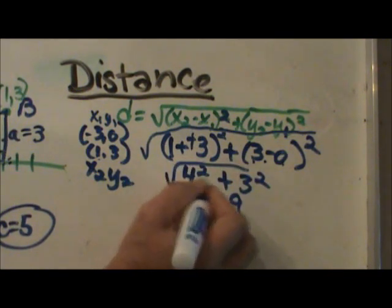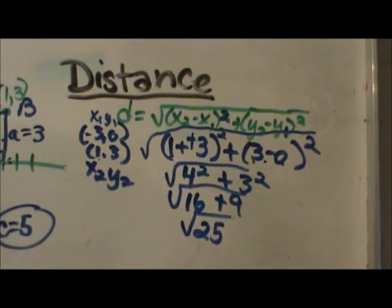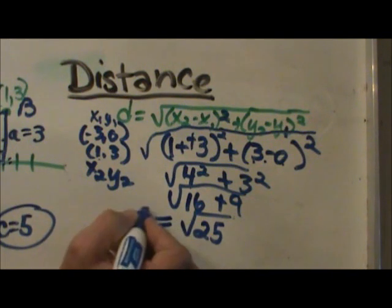So we have sixteen plus nine which is twenty five. Square root of twenty five is equal to five.